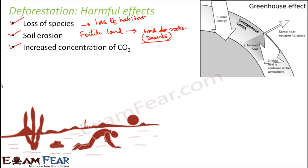Another harmful effect is increased concentration of carbon dioxide. Plants take in carbon dioxide from the atmosphere for photosynthesis. When we have fewer plants or no plants, there is nothing to absorb carbon dioxide from the atmosphere. Therefore, the concentration of carbon dioxide in the atmosphere will increase. Carbon dioxide is a greenhouse gas — it absorbs infrared radiation and increases the temperature of the earth. If carbon dioxide increases too much, the earth's temperature will also rise too much, resulting in global warming.